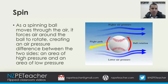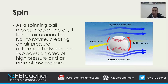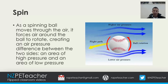As a spinning ball moves through the air, it forces air around the ball to rotate, creating an air pressure difference between the two sides — an area of high pressure at the top and an area of low pressure at the bottom of that image. The side of the ball that rotates in the opposite direction to the flight path creates the low pressure area, which sucks the ball and curves its trajectory, because objects move from a high pressure environment to a low pressure environment.